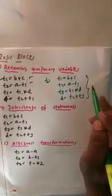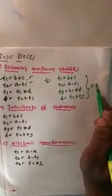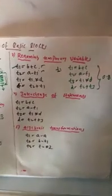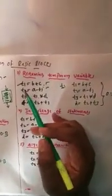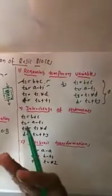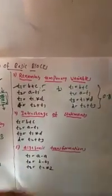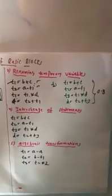This is the renaming of temporary variables — instead of the same variable containing multiple values, we rename one variable into another variable to produce the optimized block.